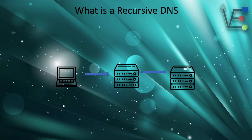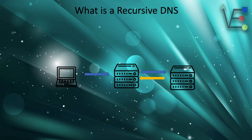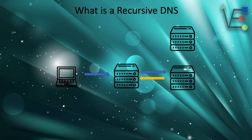That request asks: do you know the IP address of virtualizeeverything.com? If that server does not know the IP address of virtualizeeverything.com, it sends back a reply saying: I do not know the IP address of virtualizeeverything.com, but try this server that handles IP addresses of .coms.